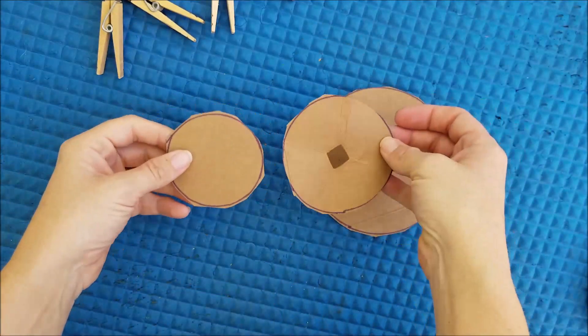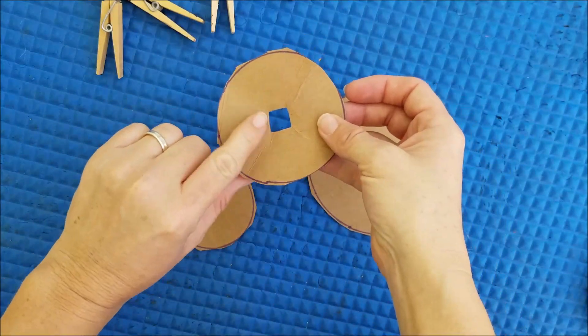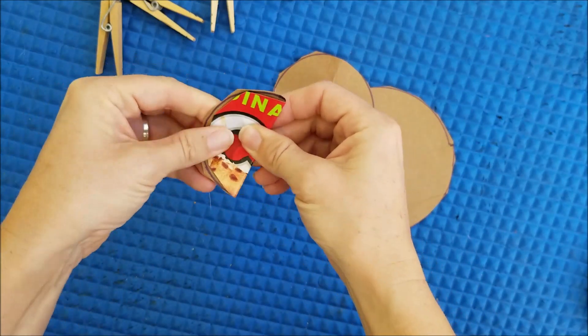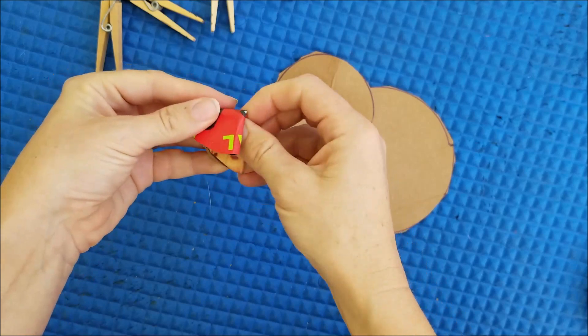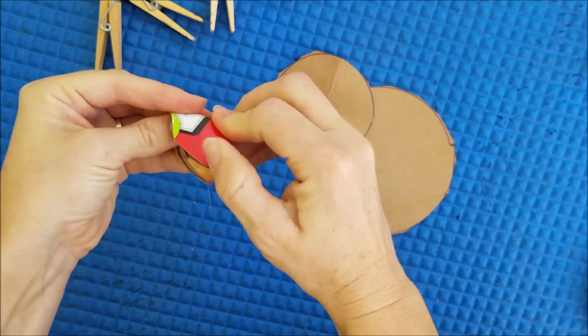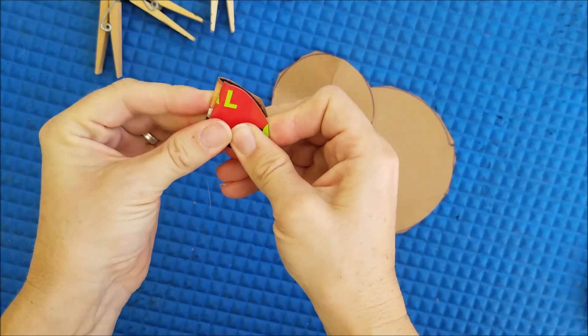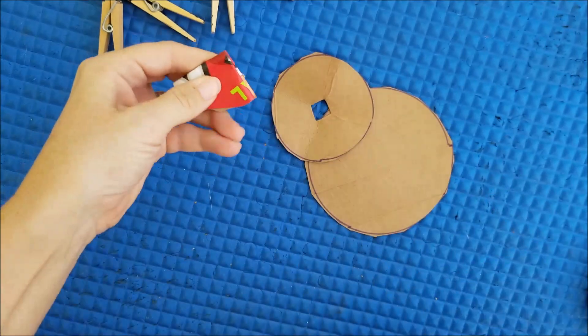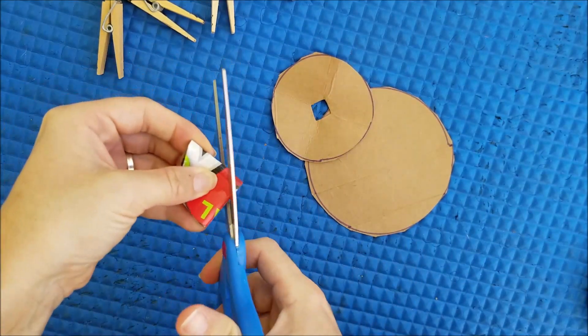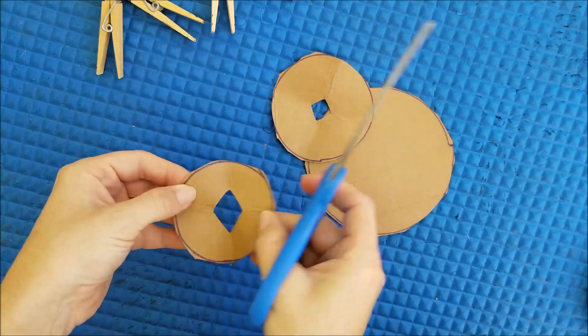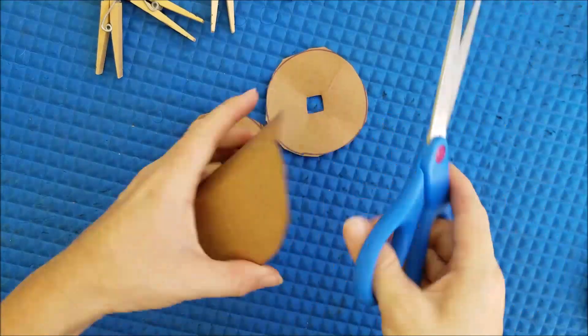OK, so I've cut out my discs and now I just need to make a little hole in the middle of each disc. The easiest way I find to do this is just to fold my cardboard into quarters and just cut off the point. There we go.